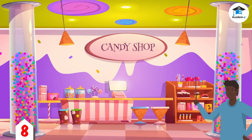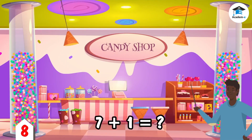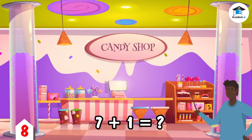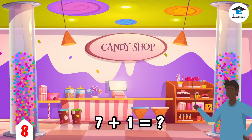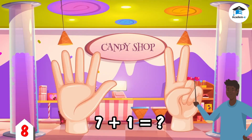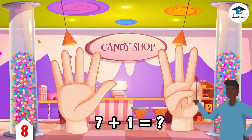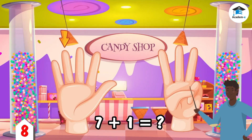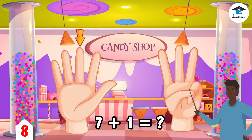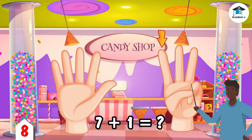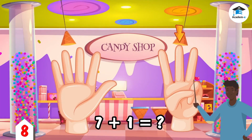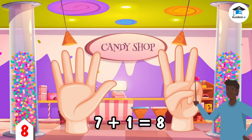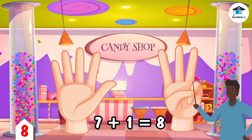Let's have another example: let's find the sum of 7 and 1. Show 7 fingers and another 1. Ready, let's count them all: 1, 2, 3, 4, 5, 6, 7, 8. The sum of 7 and 1 is 8.